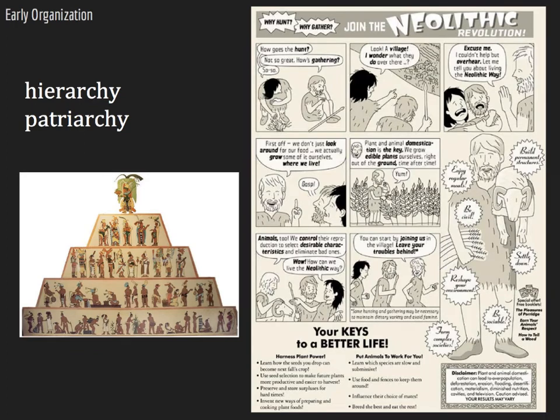Once humans settled more permanently into one place and the division of labor was normalized, social hierarchies began to emerge. A social hierarchy is when a person's place in society is based on any variety of indicators, such as sex, occupation, or wealth. One of the earliest social hierarchies that emerged was patriarchy — one which made males of higher status than females. Almost all ancient human societies adhered to patriarchy, which meant that males had more, often much more, political, social, and economic power than women did.